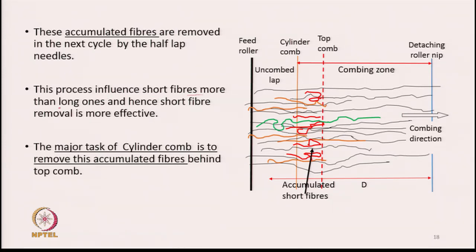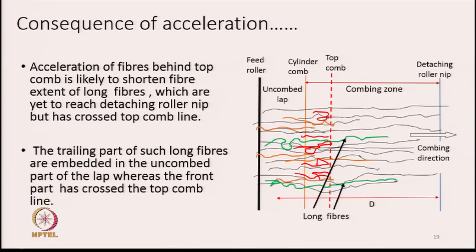Many short fibres will be arrested by the top comb and will accumulate behind the top comb, as shown in the diagram by the red lines. The process influences short fibres more than long ones, and short fibre removal is more effective. When they accumulate behind the top comb, most of them will not be able to move through, so they remain there in the fringe itself. In the next cycle the cylinder needles are going to take them out. The major task of the cylinder comb is to remove these accumulated fibres behind the top comb in the next cycle.